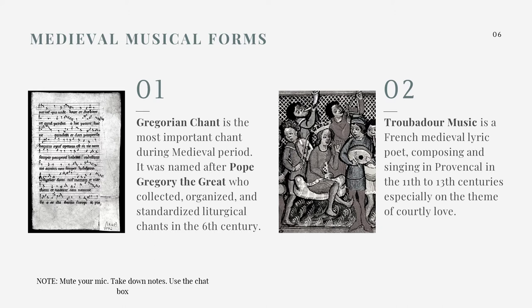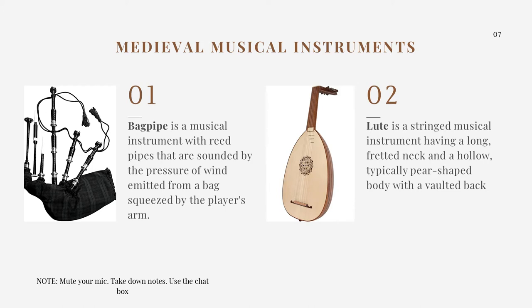That was an example of troubadour music. Now let's discuss the different musical instruments from the medieval period. First we have the bagpipe, which is a musical instrument with reed pipes sounded by the pressure of wind emitted from a bag squeezed by the player's arm. The second one is the lute, which is a string musical instrument having a long fretted neck and a hollow pear-shaped body with a vaulted back.